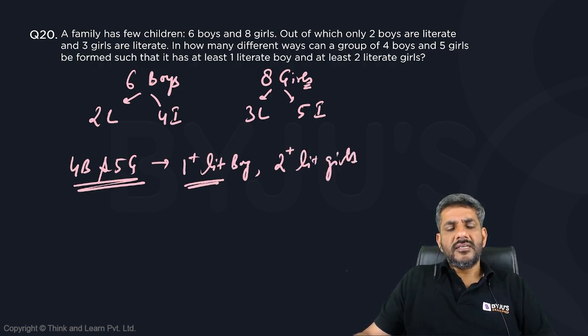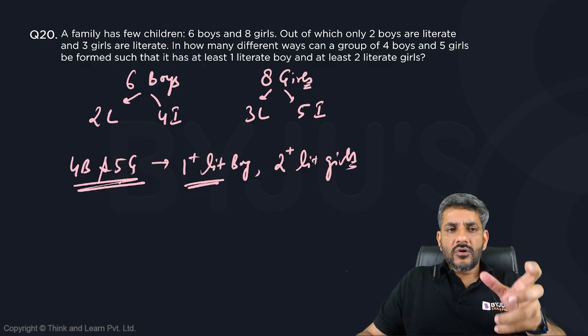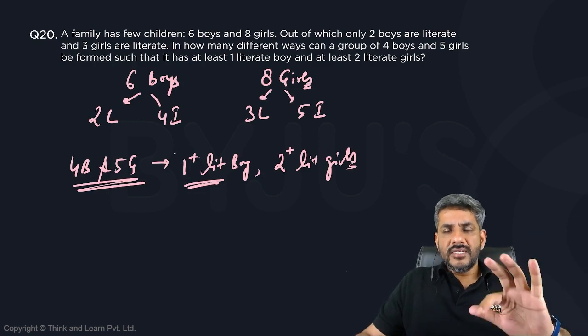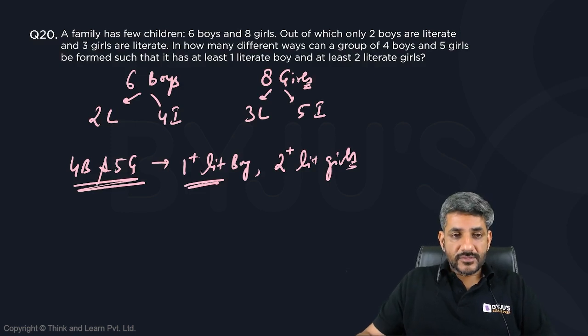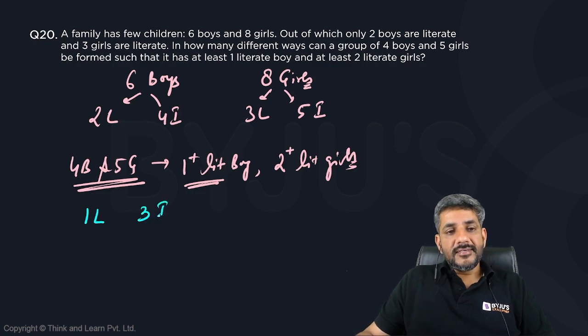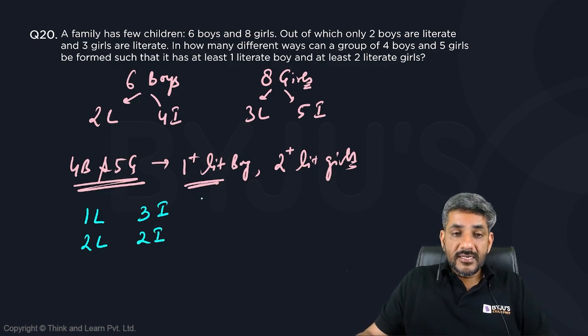So what are the possibilities? Let's talk about the number of literate boys, illiterate boys, and all that. When I talk about the boys, I need four boys. Out of four boys, I can have one literate boy and three illiterate boys, or I can have two literate boys and two illiterate boys. These are the only two possibilities.